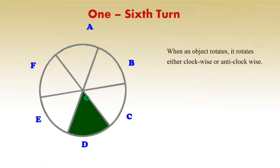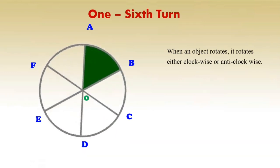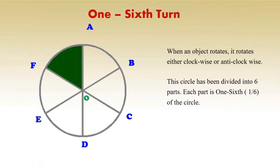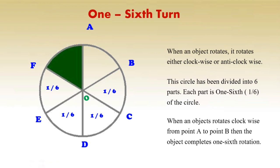One-sixth turn. When an object rotates, it rotates either clockwise or anti-clockwise. This circle has been divided into six parts. Each part is one-sixth of the circle. If an object rotates one part out of six parts, it means one by six. When an object rotates clockwise from point A to point B, C, D, E, F — if point A rotates to point B, then we say that the object has completed one-sixth rotation.